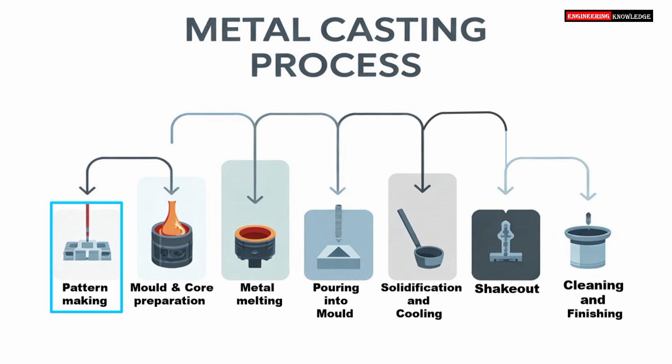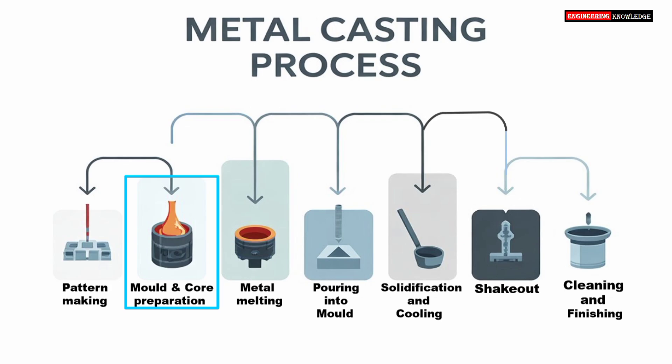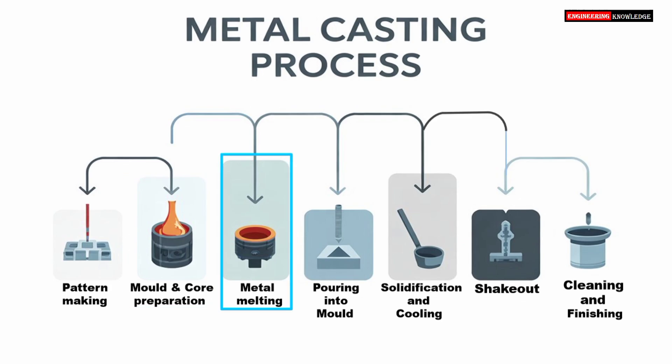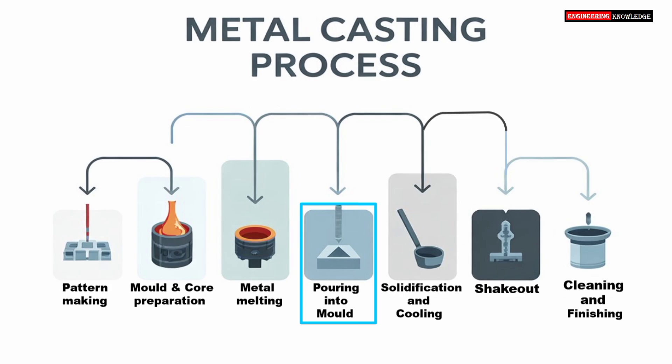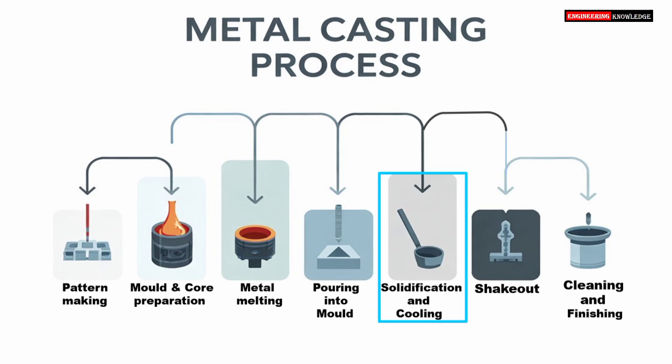The first step is pattern making, where a replica of the final part is created. Next comes mold and core preparation, where the mold cavity is made to receive the molten metal. In the third step, the metal is melted until it becomes liquid. Then it is poured into the mold carefully. As the metal cools down, it undergoes solidification and takes the shape of the mold. After cooling, the mold is broken to remove the casting. This step is called shakeout.